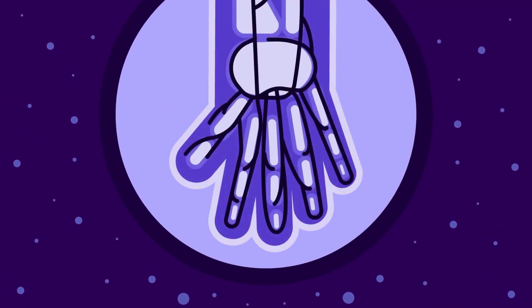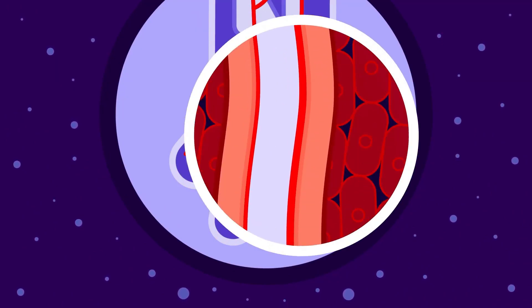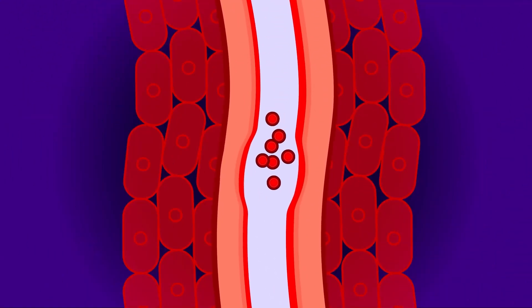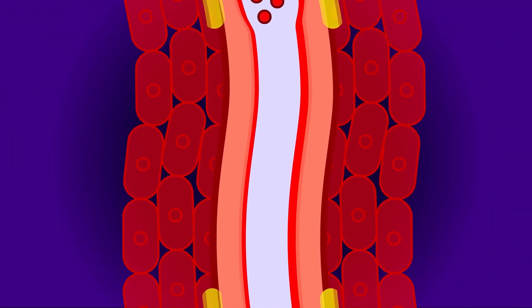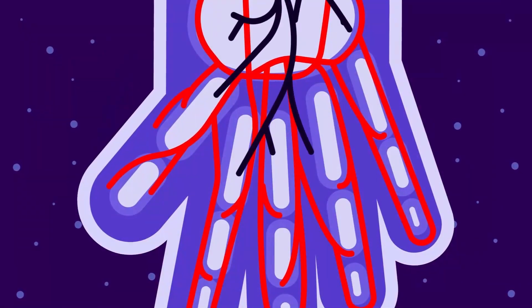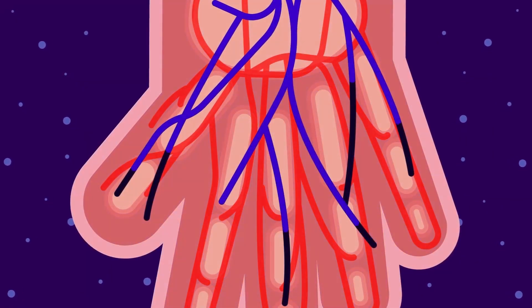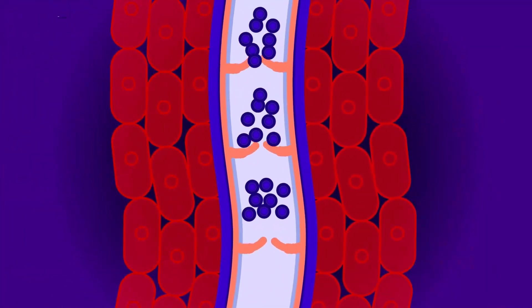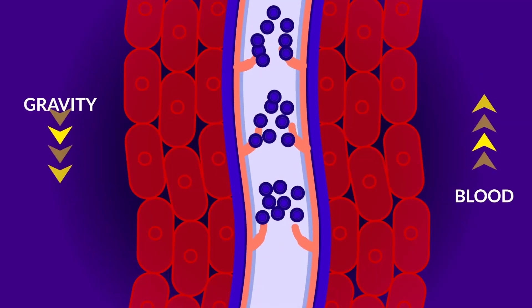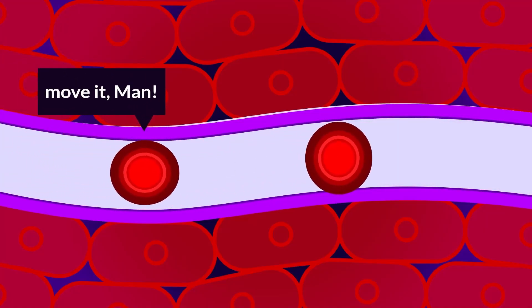Arteries are located deep in the muscle and carry oxygenated blood, which is why they appear red. As arteries carry blood under pressure due to the pumping heart, the blood is less likely to flow in reverse, so arteries do not have valves. Veins are located nearer to the body surface and appear bluish-red as they carry deoxygenated blood. Only veins have valves, as they take blood back to the heart against gravity and with less pressure. Capillaries are located inside all tissues and, like veins, appear bluish-red as they can carry both oxygenated and deoxygenated blood. Capillaries also do not have valves as they are very narrow.